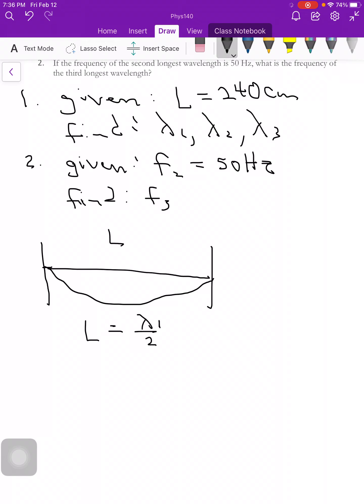That's going to be lambda 1, that's my longest wavelength. So lambda 1 is going to be equal to 2L, and so that's going to equal 2 times 0.24 centimeters. Right, multiply we're going to do that. So lambda 1 is equal to 4.8 meters.